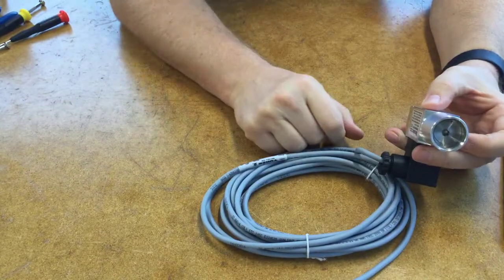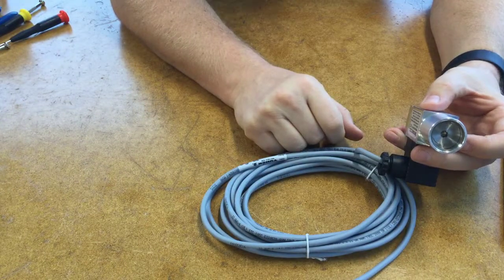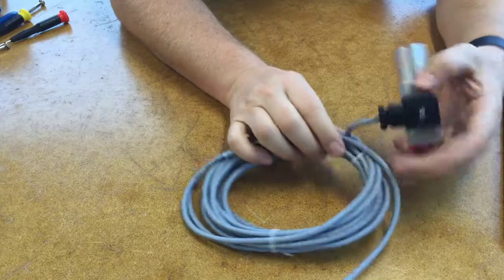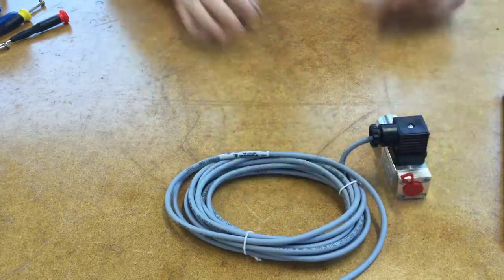And once that's on tight the gasket will seal up nicely and keep the moisture out. Incidentally, this is how you adjust one of these - that's also covered in that instruction manual that comes with the switch. So there we go, normally open pressure switch.